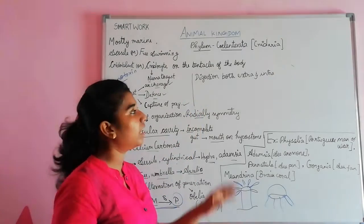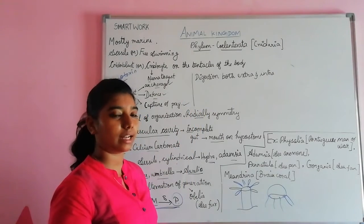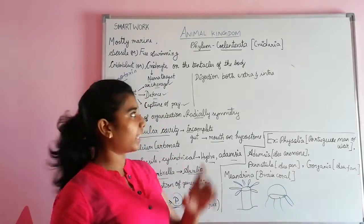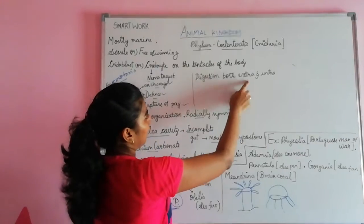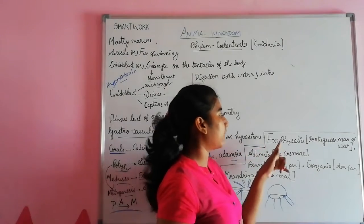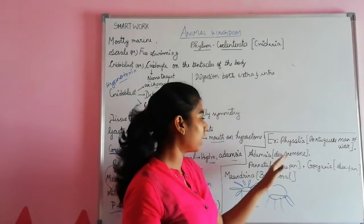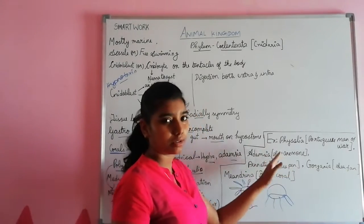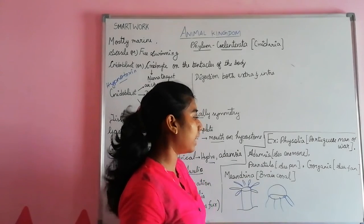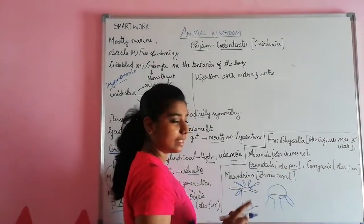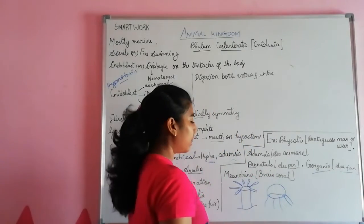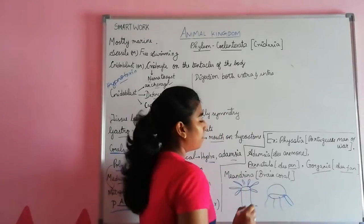Digestion is both intracellular and extracellular. Now the examples: Physalia is the Portuguese man-of-war. Adamsia is the sea anemone. Pennatula is the sea pen — both share 'pen' in the name. Gorgonia is the sea fan. Meandrina is also called brain coral.